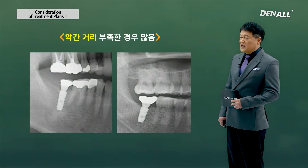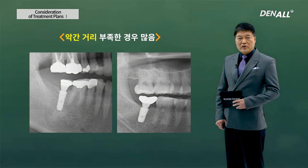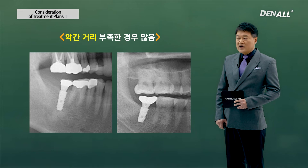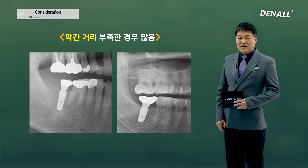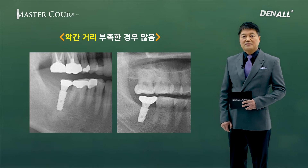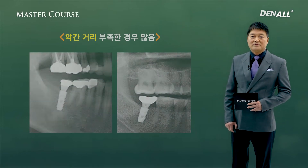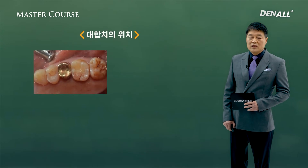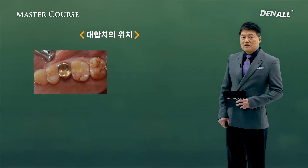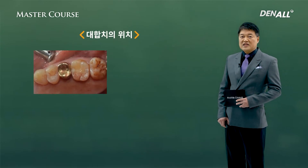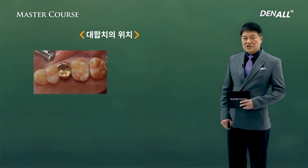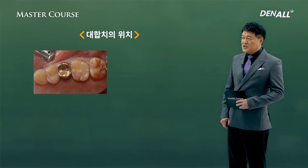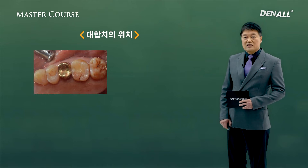After extraction, in order to prevent extrusion of opposing teeth, we have to do preventative fixation. In the posterior molar region when you do restoration, there are multiple cases where inter-arch space is not enough, so we need to pay more attention to it. We also have to check the position of the opposing tooth where the implant is going to be placed.